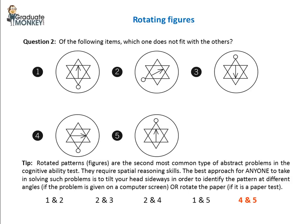Here's a tip. Rotated patterns or figures are the second most common type of abstract problems in the cognitive ability test. They require spatial reasoning skills and the best approach for anyone to take in solving such problems is to tilt your head sideways in order to identify the pattern at different angles, if the problem is given on a computer screen, or just rotate the paper if it's a paper test.